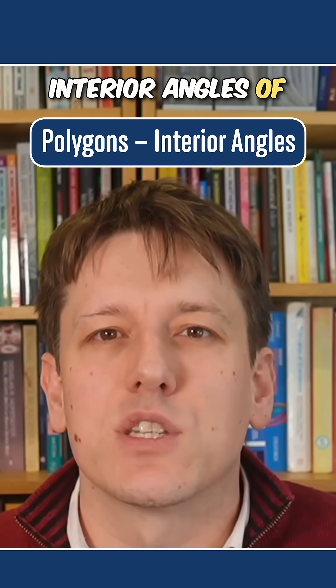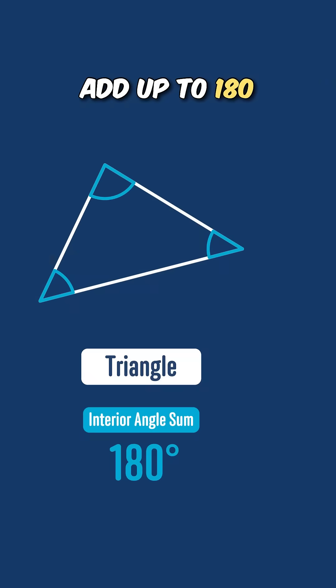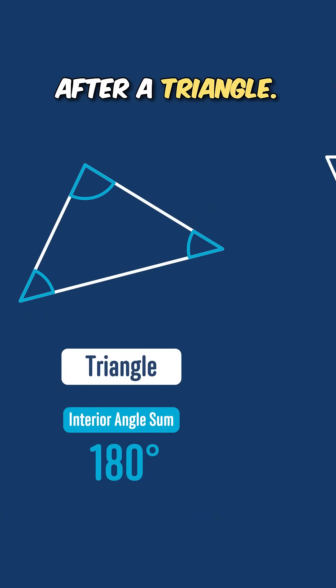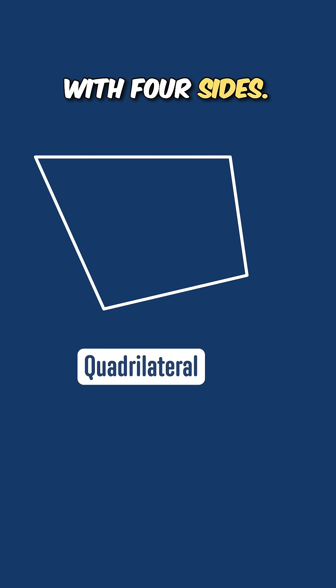As you probably already know, the interior angles of a triangle always add up to 180 degrees. So let's think about the next simplest shape after a triangle, the quadrilateral with four sides.